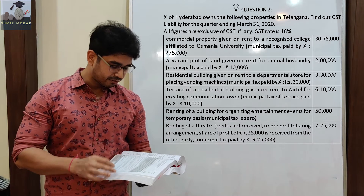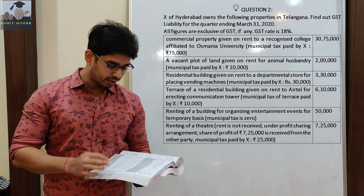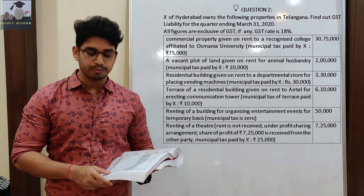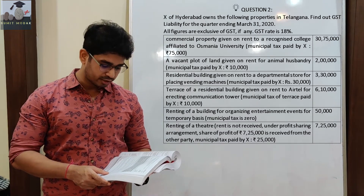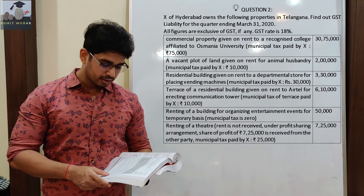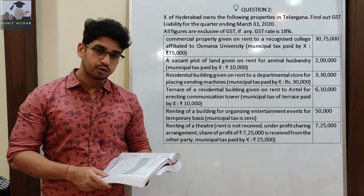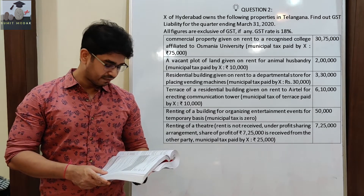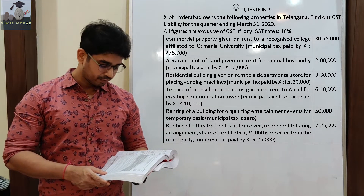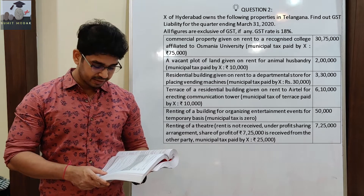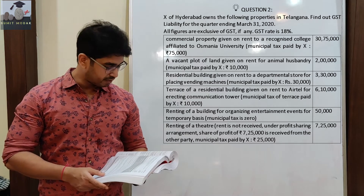Commercial property given on rent to a recognized college affiliated to Osmania University. Municipal tax paid by X: Rs. 75,000. Total amount of rent is Rs. 30,75,000.